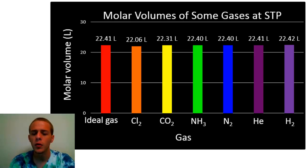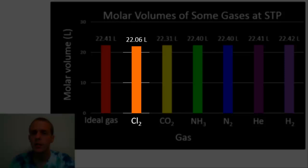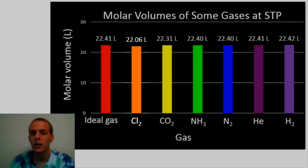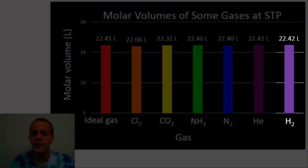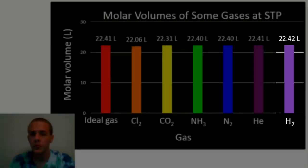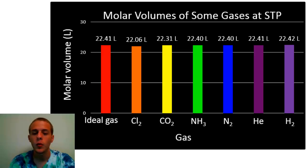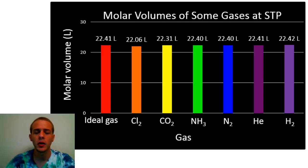Notice that the molar volume of chlorine gas is 22.06 liters, so that's less than the molar volume of an ideal gas. And if we look at hydrogen gas, that's actually just one hundredth of a liter larger than the molar volume of an ideal gas. So what's going on? Why aren't these gases behaving like they should? That's what we're going to talk about in this video.